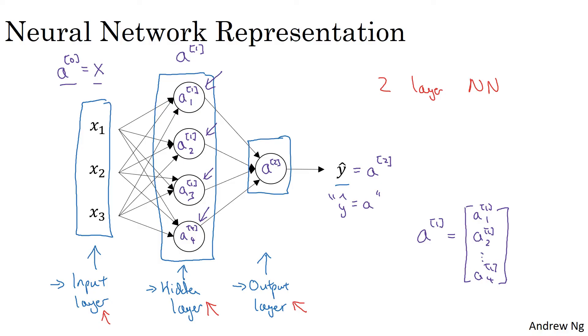So technically, maybe there are three layers in this neural network because there's the input layer, the hidden layer, and the output layer. But in conventional usage, if you read research papers and elsewhere in the course, you see people refer to this particular neural network as a two-layer neural network because we don't count the input layer as an official layer.